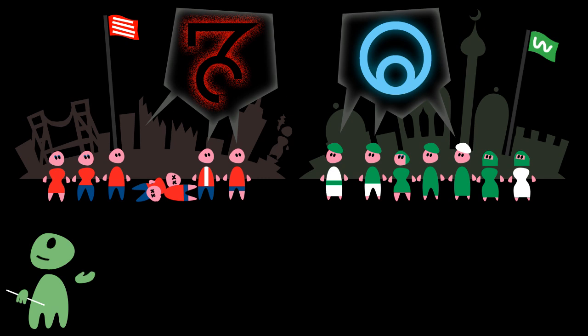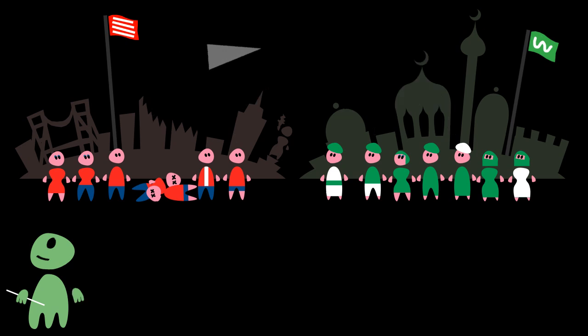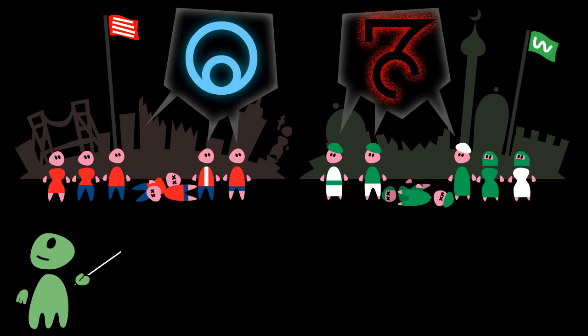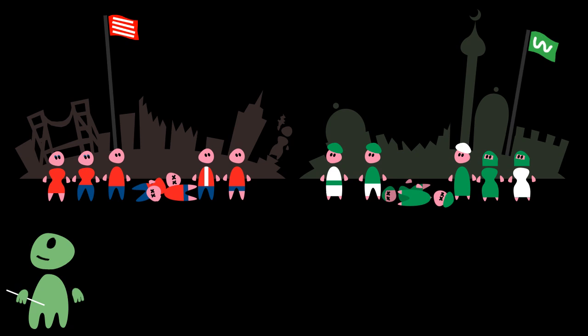Now, if the red guys retaliate, or even attack a part of the green tribe which had nothing to do with the attack, this is considered good by the red tribe and evil by the green tribe, for the same reasons. In consequence, each tribe will have the impression that the other tribe is evil.